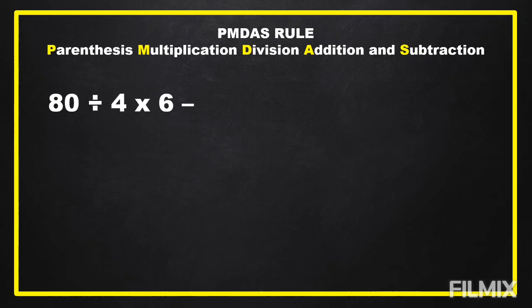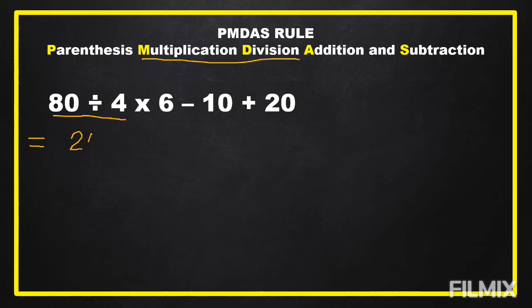Another example: 80 divided by 4 times 6 minus 10 plus 20. In this example, there is no parenthesis, so we go directly to multiplication and division. In this expression, division comes first, so we divide before we multiply. As the rule says, multiplication and division can be interchanged — if division comes first from left to right, we divide first. So, 80 divided by 4 equals 20. Then copy times 6 minus 10 plus 20.